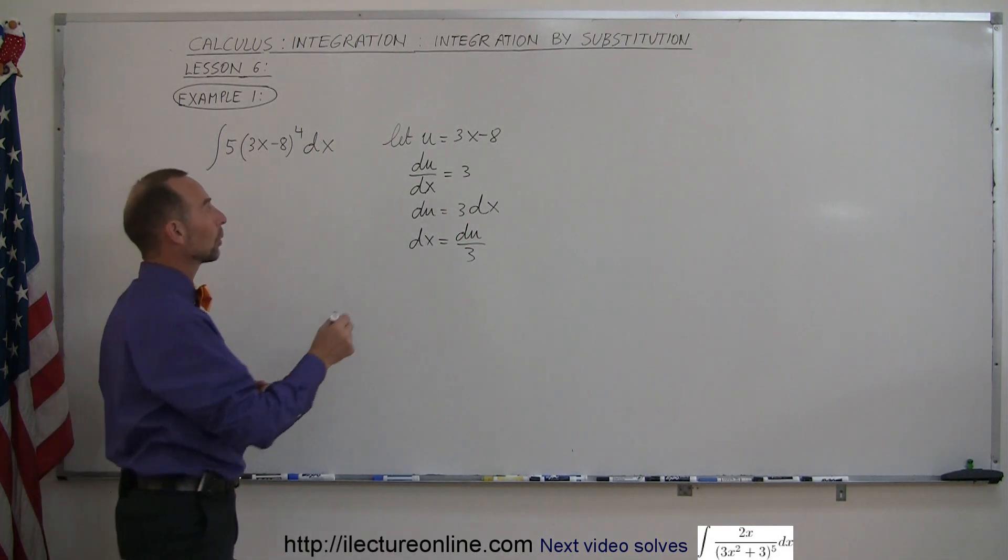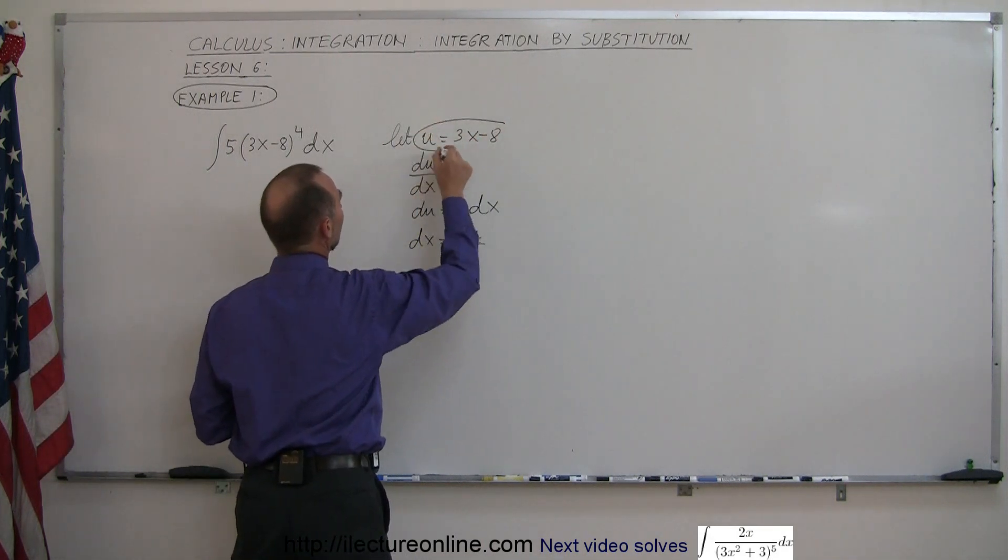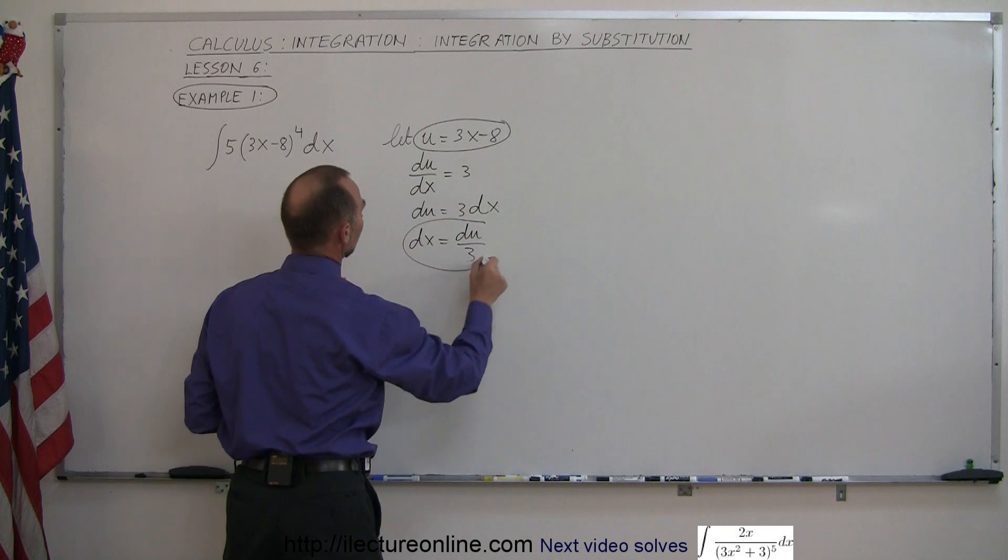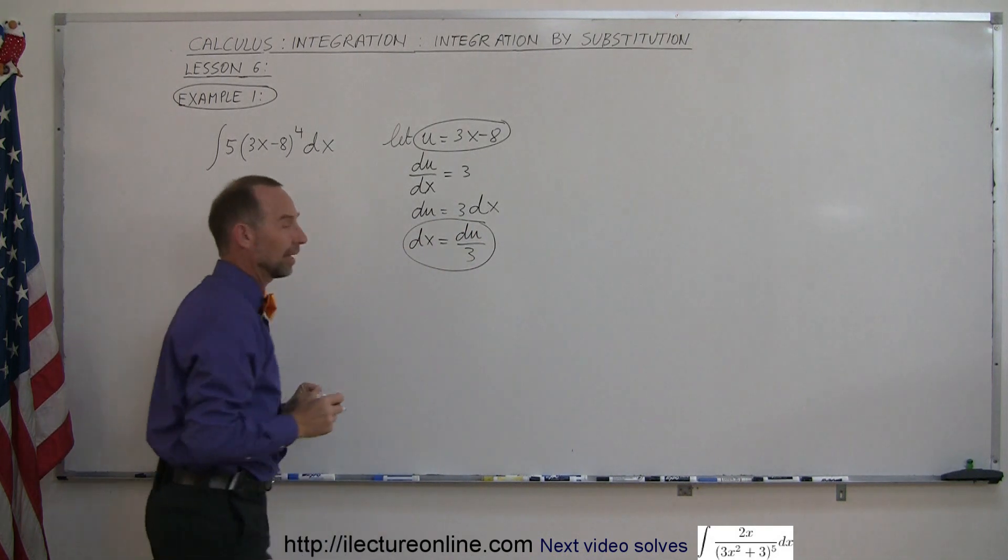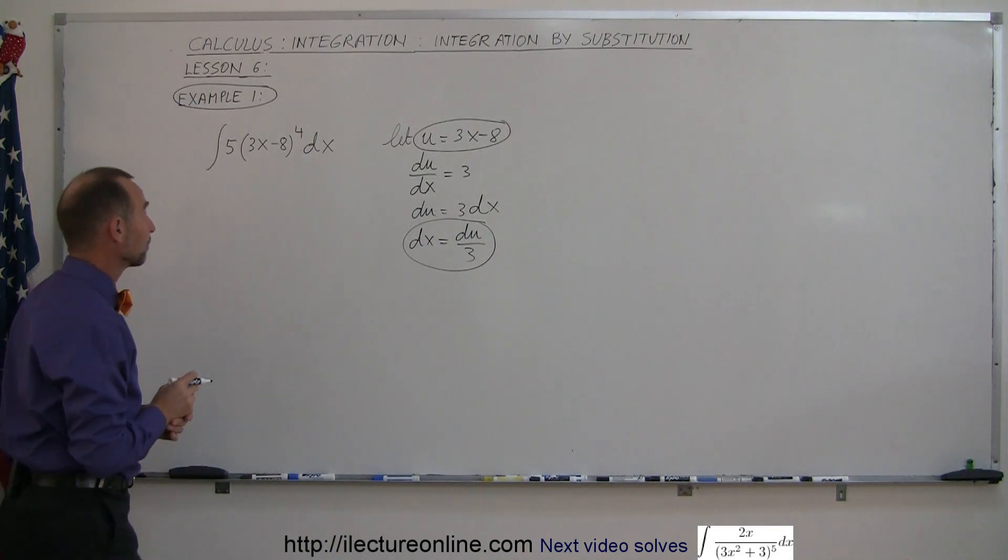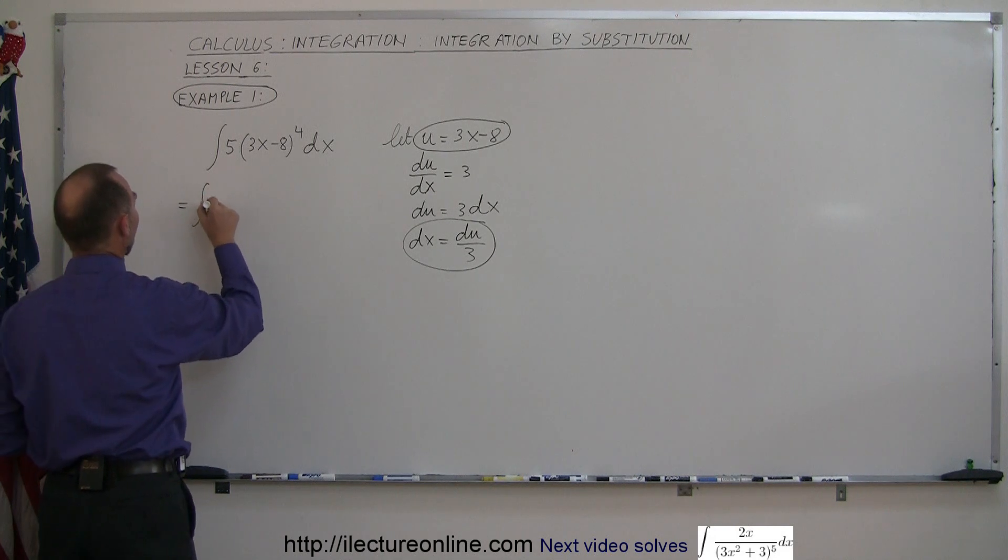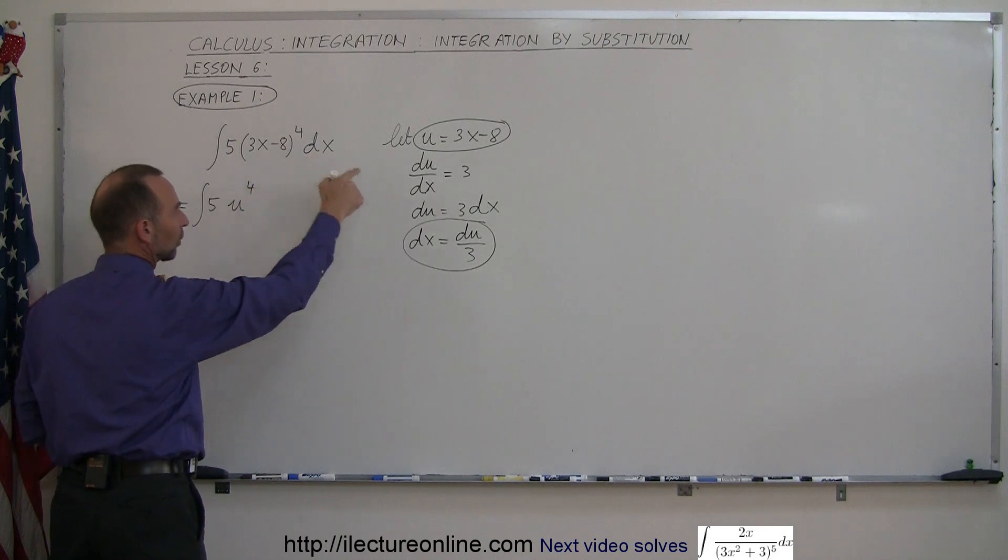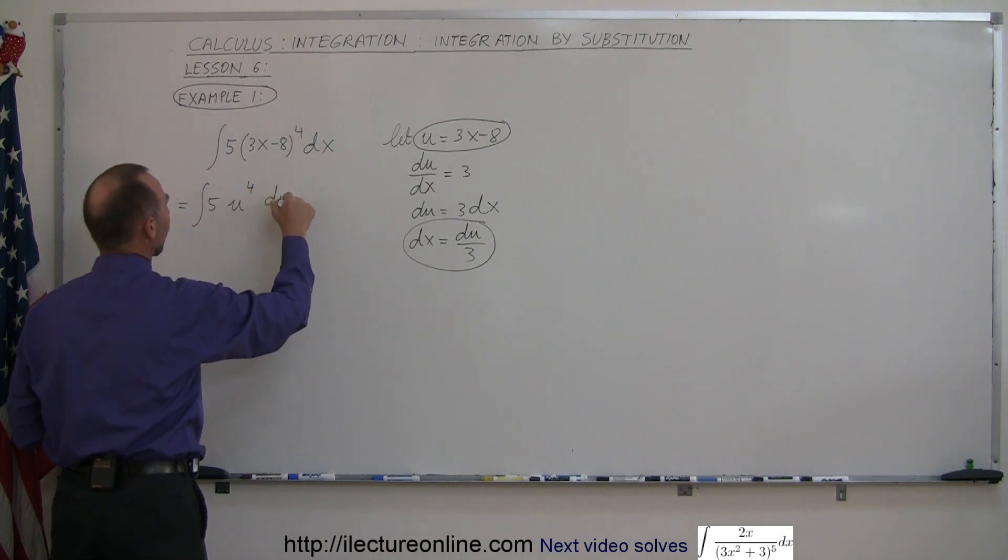Now what we're going to do is substitute this in for 3x minus 8, and we're going to substitute this for dx. When we do that, we get the following: this becomes the integral of 5 times, instead of 3x minus 8, we're going to write u to the fourth power. Instead of dx, we're going to write du over 3.